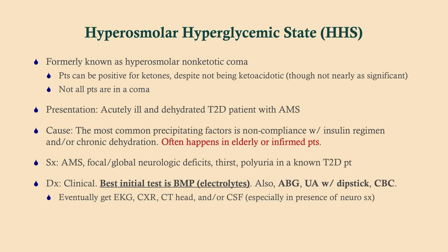Hyperosmolar hyperglycemic state occurs in a completely different kind of patient. This used to be known as hyperosmolar non-ketotic coma, but the name was changed. These are usually older, infirmed type 2 diabetics — often coming from nursing homes or just non-compliant with their medication. What happens is they become very dehydrated, their volume contracts, and they go into a death spiral. Like DKA, we want to replenish fluids and find the underlying cause.